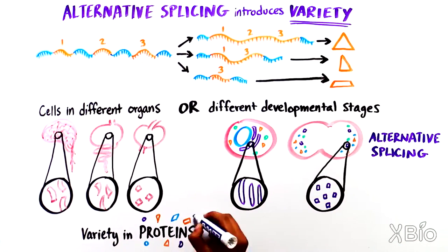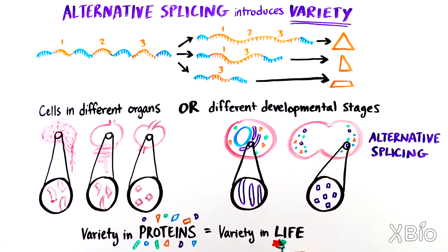Overall, splicing is an extremely important process. Because of it, we can produce the many varieties of proteins that contribute to the rich complexity of life.